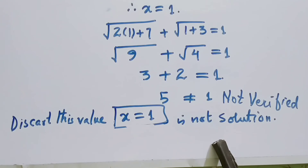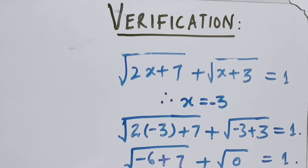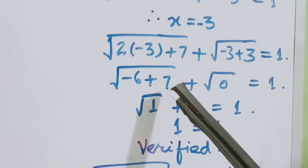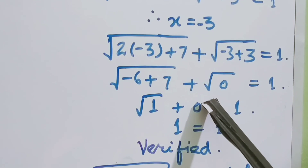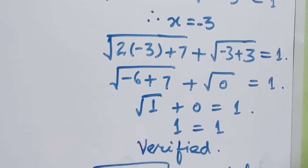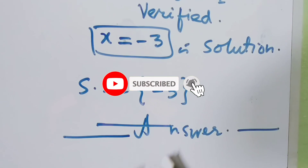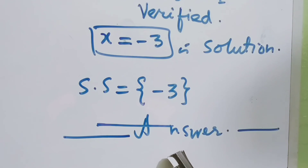We verify x = −3: root of (2×(−3) + 7) plus root of (−3 + 3) = root of (−6 + 7) plus root of 0 = root of 1 + 0 = 1 + 0 = 1. Since 1 = 1, x = −3 is verified. Therefore the solution set is {−3}. This completes our video lecture and we will meet in the next lecture.